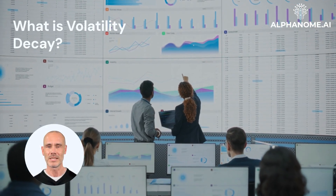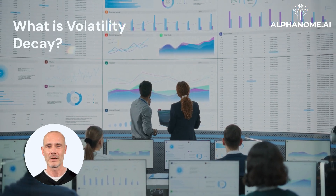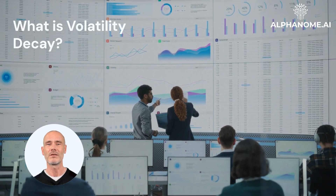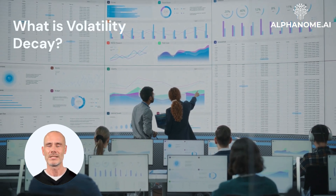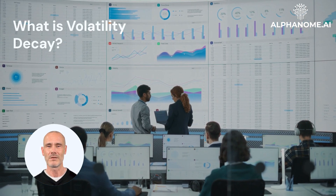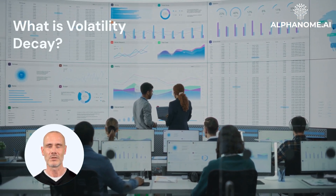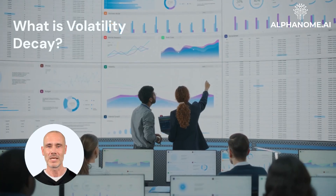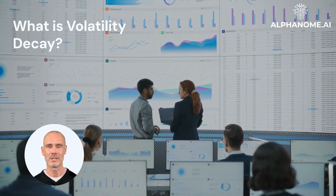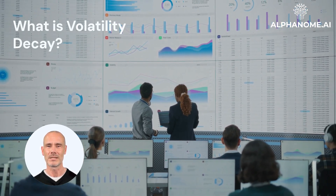What is volatility decay? Volatility decay, also known as beta slippage or time decay, refers to the tendency of leveraged ETFs to lose value over time in volatile markets, even if the underlying index they track ends up flat. This effect is more pronounced in funds with higher leverage ratios and during periods of increased market volatility.